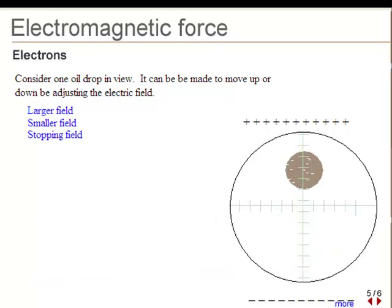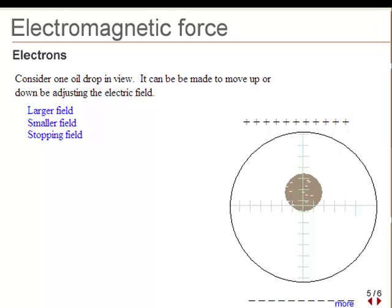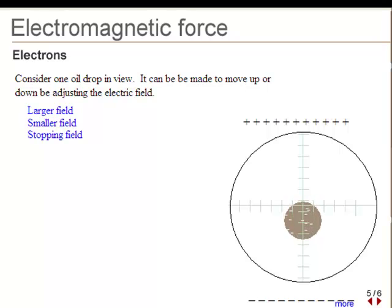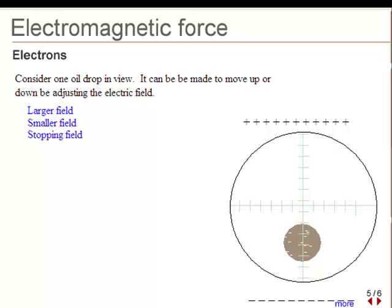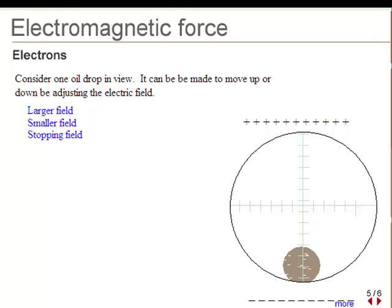Using the same formula as gave the charge to mass ratio in the cathode ray tube experiment, Millikan was able to deduce the charge on the oil drops. In this case the acceleration is due to gravity on the oil drop of mass m. The field E is adjusted to stop the oil drop as seen through the microscope.